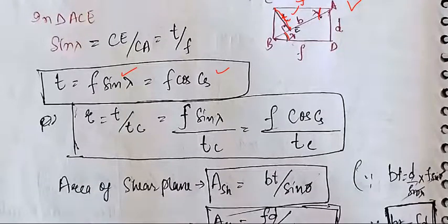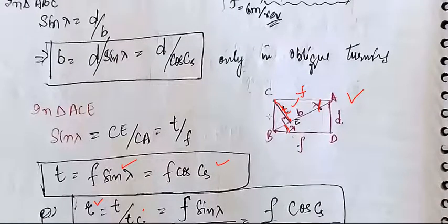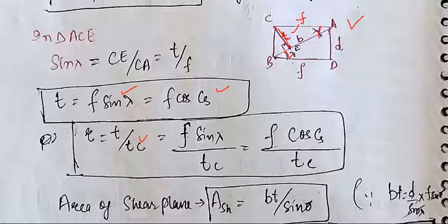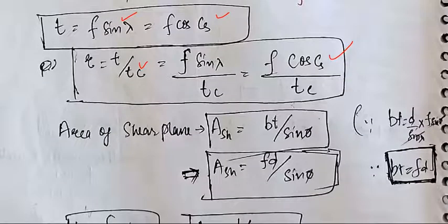The cutting ratio r is equal to t divided by tc, where t is the thickness of the uncut portion and tc is the thickness of the chip. So r equals f·sin(lambda) divided by tc, which can also be written as cos(Cs) divided by tc.